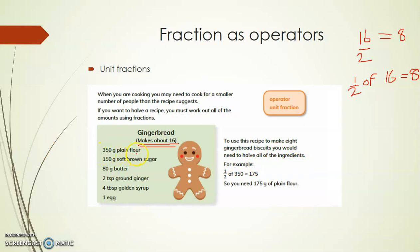So: plain flour — 350 divided by 2, which is half of 350, gives 175. Brown sugar — half of 150, which is 75. Butter — half of 80, which is 40 grams.